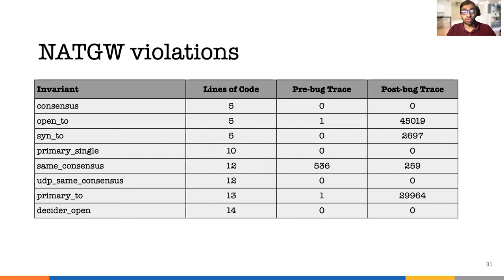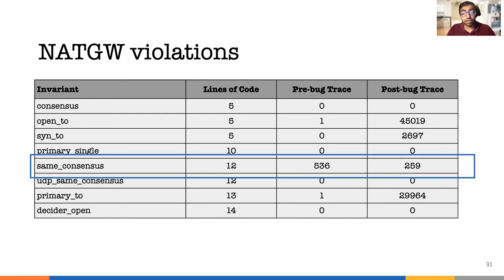This table shows the number of times we observed violations of each invariant in a real-world traffic trace — in other words, the number of times we reached a final state in the corresponding DSFA on the global verifier. We show the numbers for two different checkpoints of the codebase, one before a bug is introduced and one after.